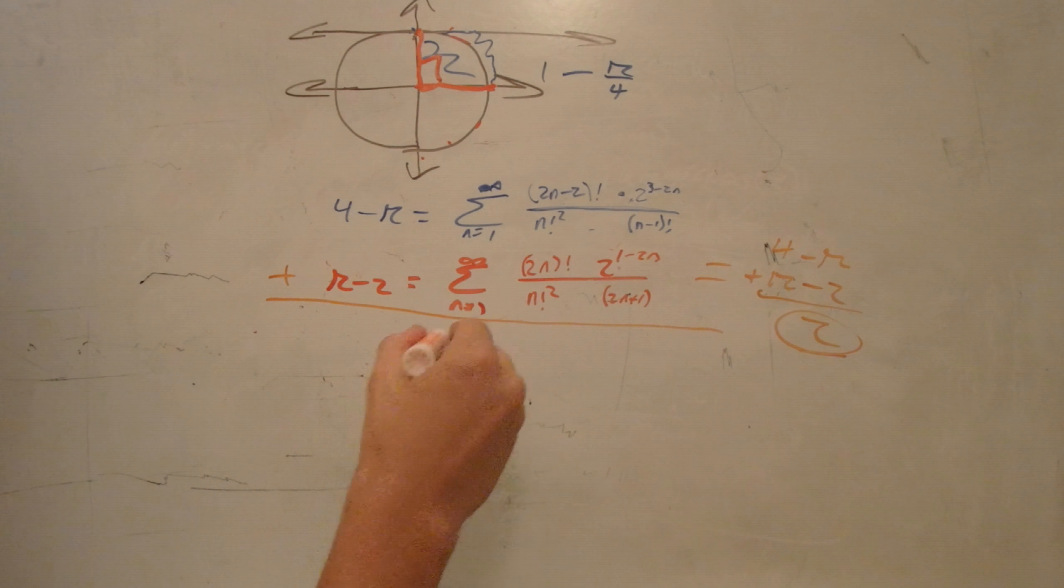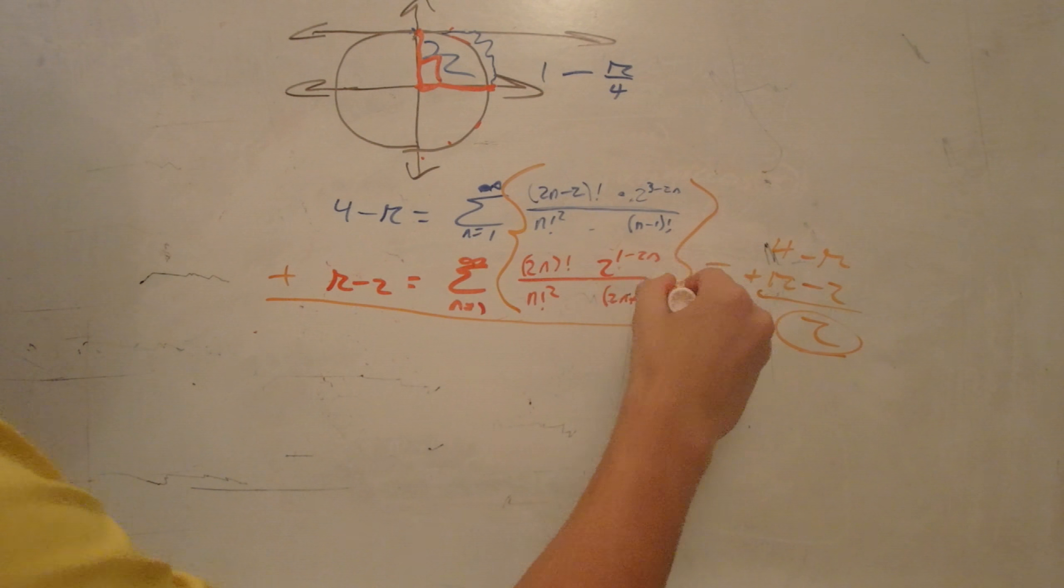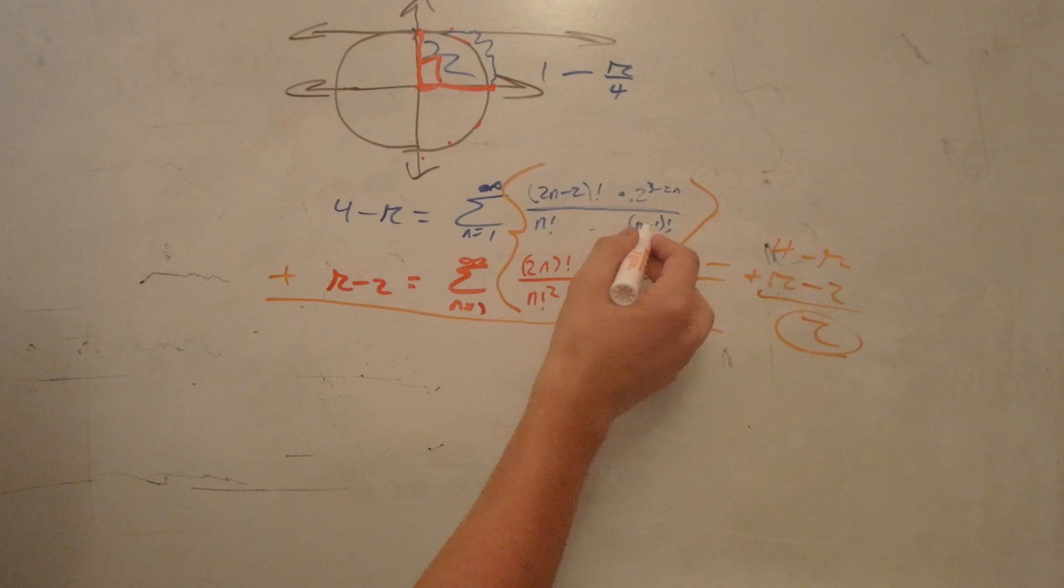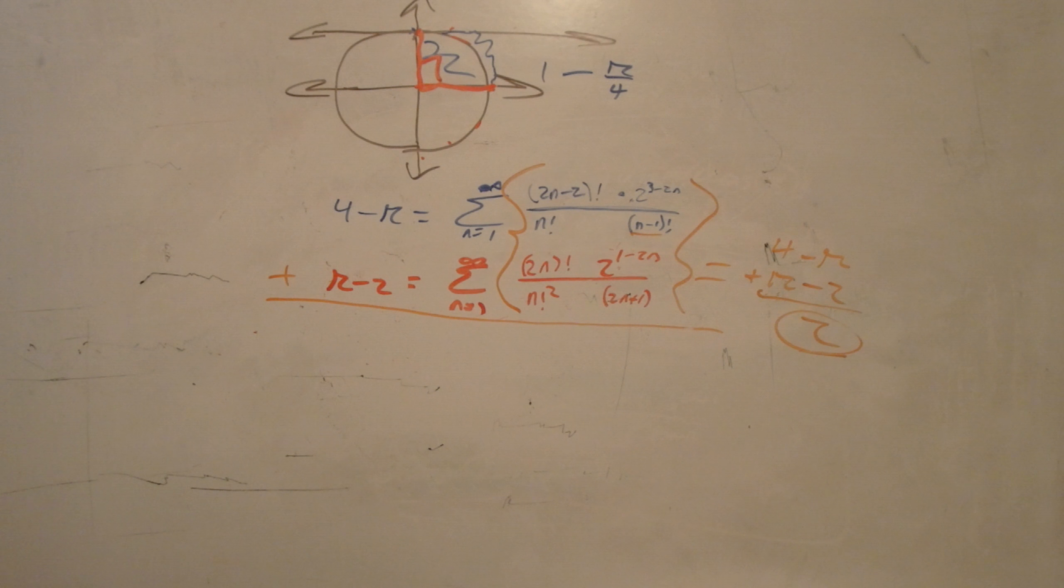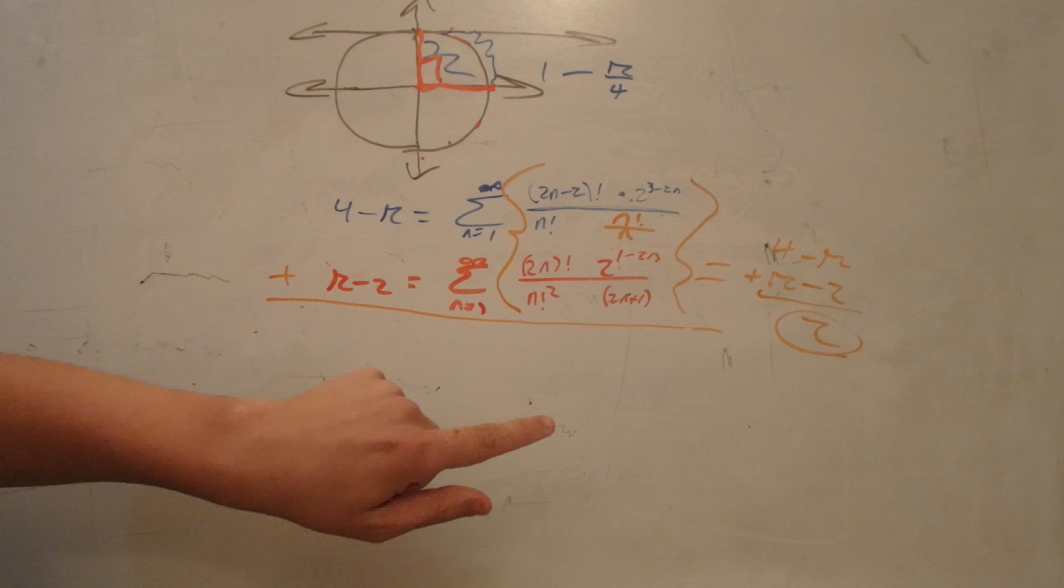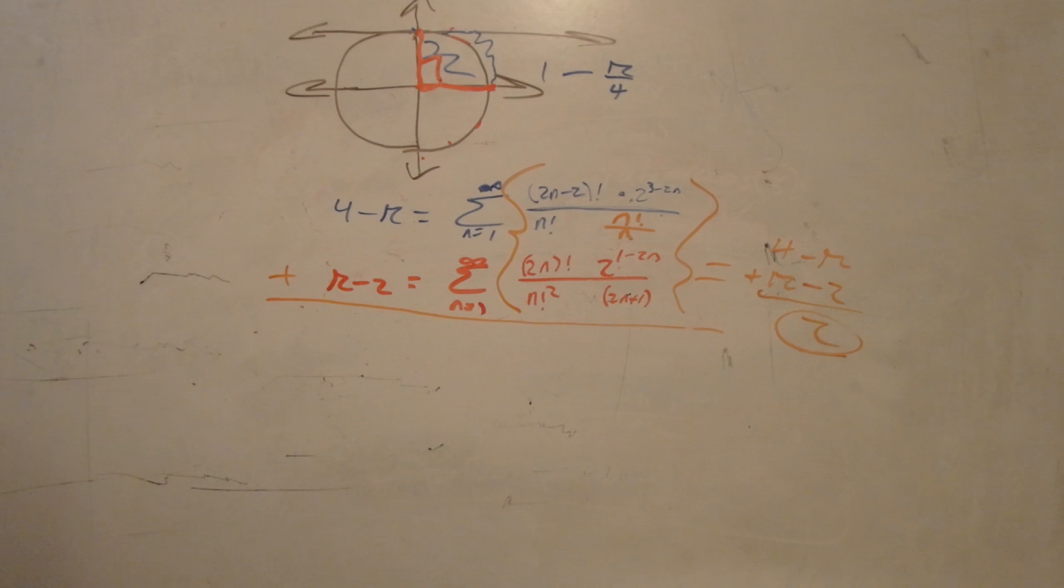Because the summations both start at 1, we can just add together these portions. In order to get a common denominator, we need to get this to equal factorial. n minus 1 factorial is n factorial divided by n. If we're dividing by a number divided by a number, we can just multiply this n to the top. We can then throw down the 4 to the nth power.